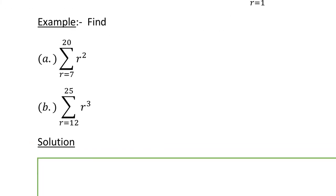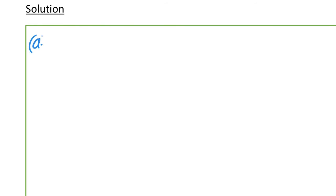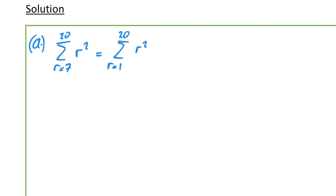The question asks: find sigma from r=7 to r=20 of r². We don't start from 1, so we write this as sigma from r=1 to 20 of r² minus sigma from r=1 to 6 of r².